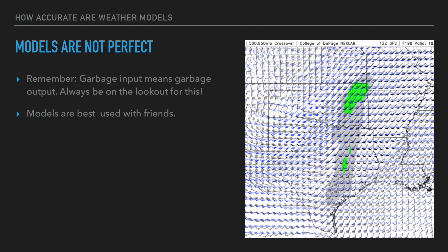Let's get back to models and discussing them, because they're not perfect. Remember that garbage in, garbage out — you've got to check it, always be on the lookout. They are not perfect; they can be used wrong. Models are best used with friends — by that I mean it's best to use more than one model to make a forecast. Don't just use one. They're also best used with observational data to kind of fine-tune a forecast.